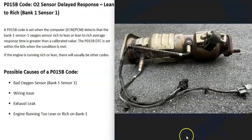O2 sensors are located down on the exhaust and they do two things. The first thing they do is monitor how much oxygen was burnt off during combustion and report this information back to the computer, which then uses it to adjust the air-fuel ratio mixture going into the cylinders.